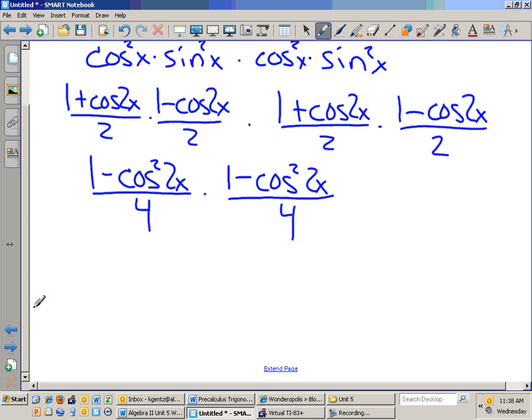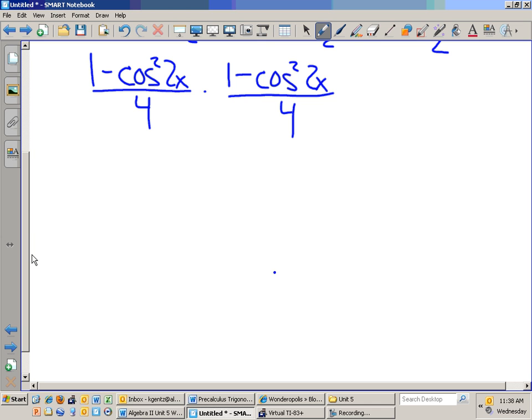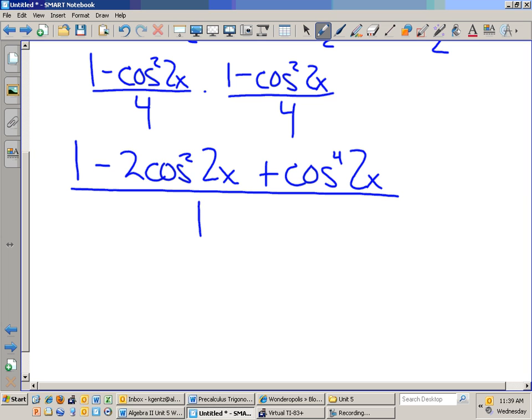times 1 minus cosine squared of 2x over 4. We're far away from being done. A far away from being done. I do have to now multiply that out. So, I see you guys watching. All right. We do have to foil this out.